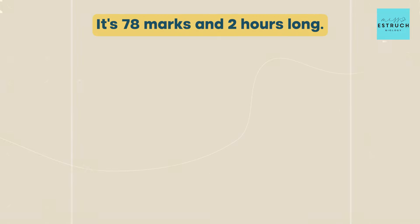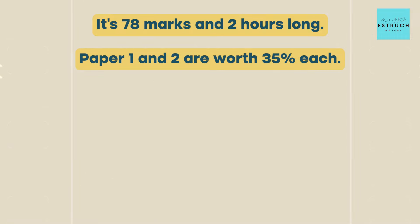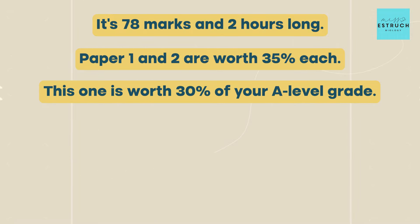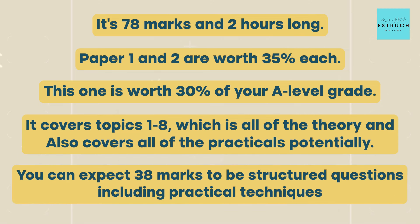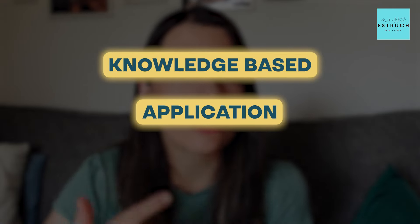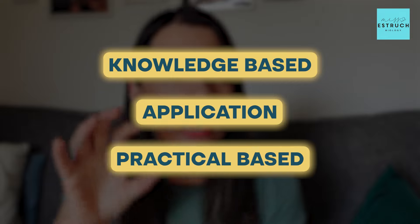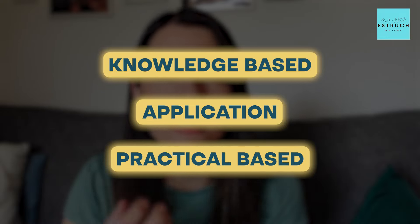First of all, it's 78 marks and two hours long. This paper is worth less of your A-level grade — paper one and two are worth 35% each, this one is worth 30%. It covers topics one to eight, which is all of the theory, and it also covers all of the practicals. You can expect 38 marks to be structured questions, including practical techniques, which could be knowledge-based, application, or more practical-based in terms of analysing skills and techniques used.